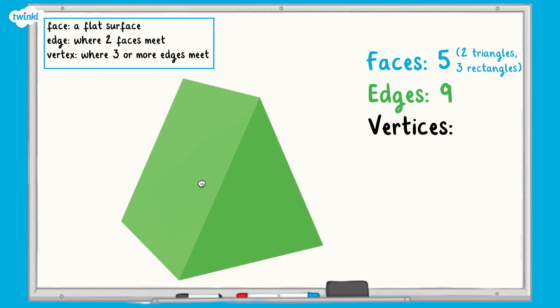Finally, we'll count the vertices. One, two, three, four, five, six. There are six vertices.